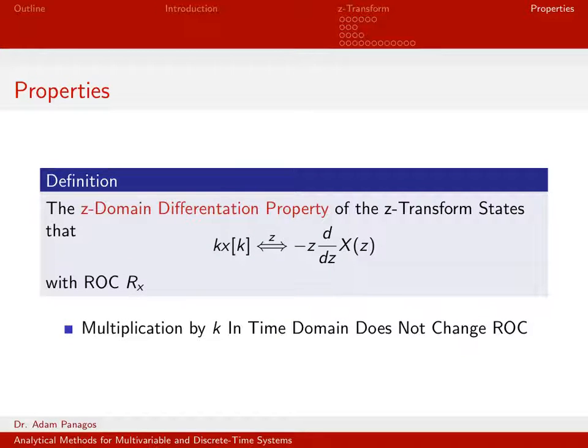What about z-domain differentiation? We can think of this as multiplying in time by k means multiplying by a negative z of the derivative of x of z. So if I multiply in the time domain by k, that means perform this operation in the z-domain. The region of convergence actually remains completely unchanged in this case.